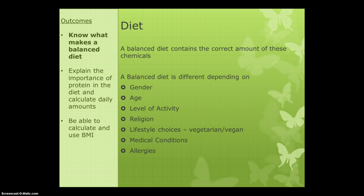Religion and lifestyle choices can also affect people's diet. For instance, Muslims won't eat pork and Buddhists won't eat meat some or all of the year. People who have chosen to be vegetarian or vegan will have to find other places to get their proteins, and they need to get a wide range of proteins. Because as mentioned, the body can't easily make everything we need from plant proteins alone, so we need to make sure to get a wide variety of them.